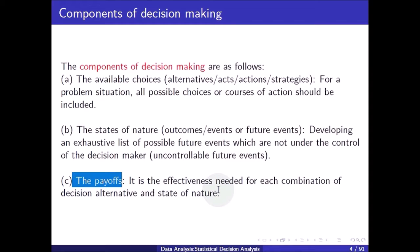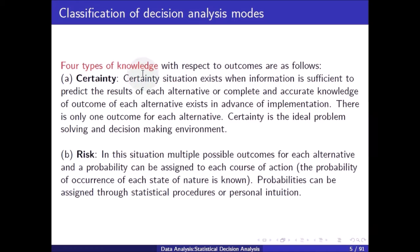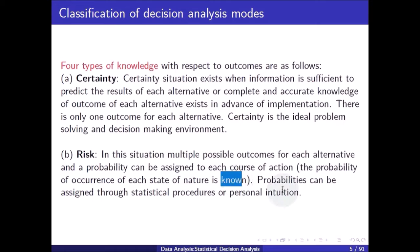The payoff is the effectiveness measure for each combination of decision alternative and state of nature. Classification of decision analysis models: four types of knowledge with respect to outcomes. Certainty exists when information is sufficient to predict the result of each alternative — complete and accurate knowledge of the outcome exists in advance. There is only one outcome per alternative. Certainty is the ideal decision making environment. Under risk, multiple possible outcomes exist for each alternative and a probability can be assigned; probabilities can be assigned through statistical procedures or personal intuition.